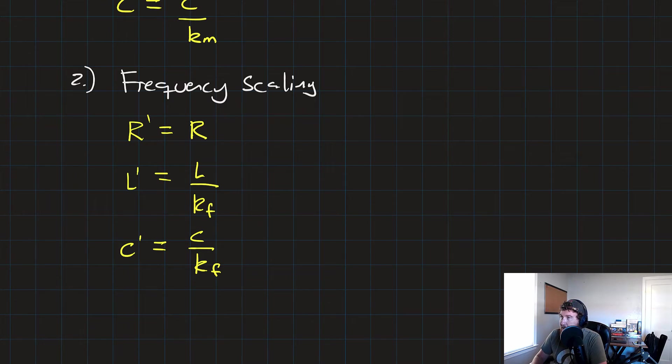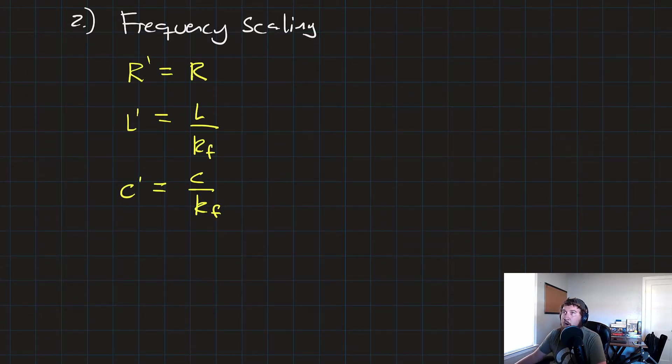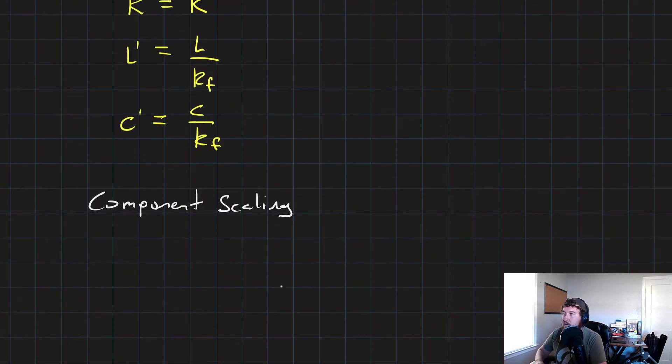And typically, we don't take them one at a time. What we do is just do what we call component scaling, where we put them together. So that means to scale a resistor, to get a new scaled resistor, R prime, that's just going to be equal to the scaling constant for magnitude, Km, times the resistance.